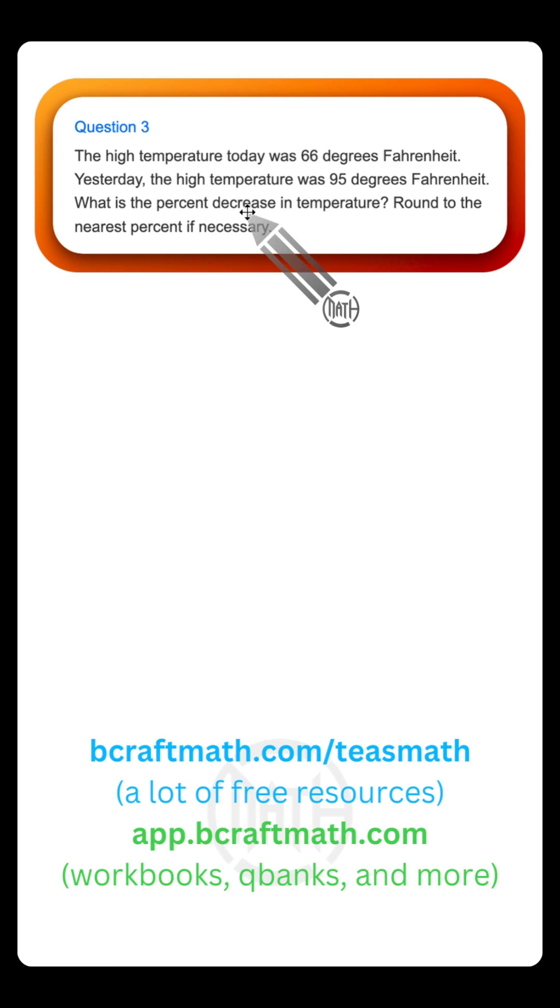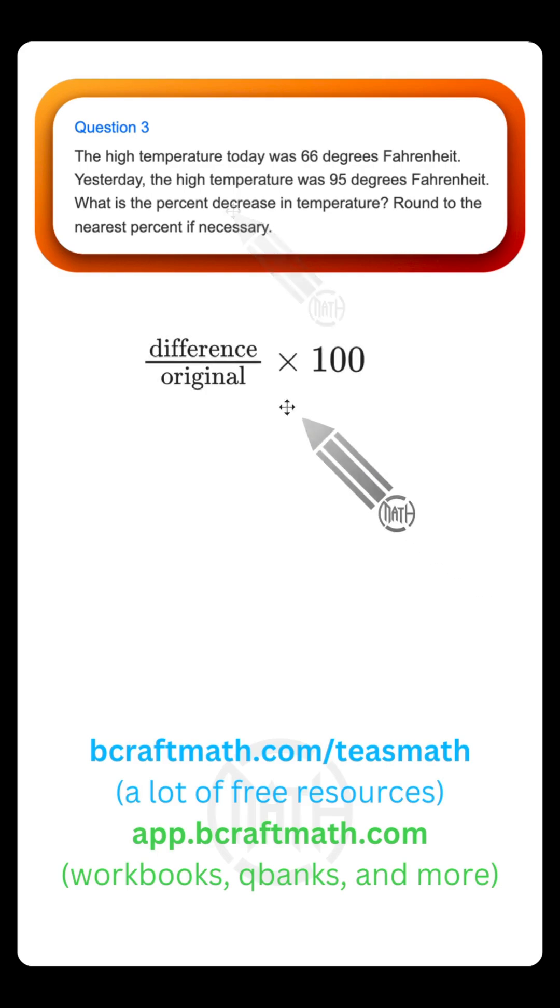This is not a percent increase problem, and that's because of the way this problem is worded. The high temperature today is 66. Yesterday it was 95. So from yesterday to today, this temperature did decrease. Yesterday it was 95, today it was 66. That's why we're trying to find a percent decrease in this particular problem.